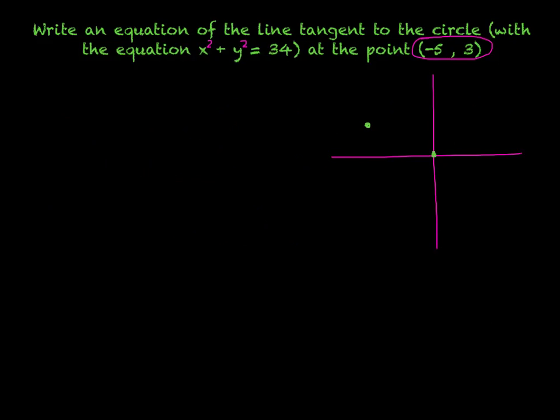And I basically, here's my circle, but I basically want to write the equation of that line, tangent line. Okay, so I need to find a point and a slope. So the point is obviously negative 5, 3.